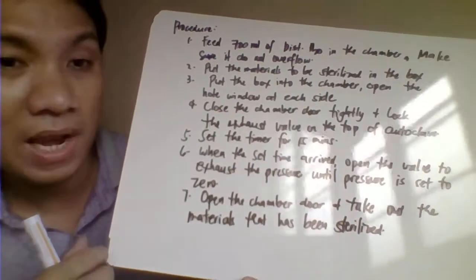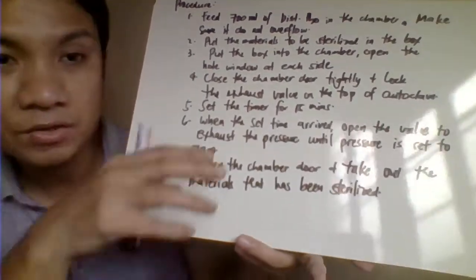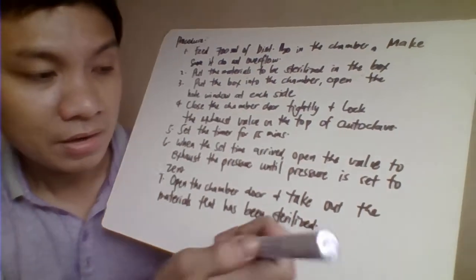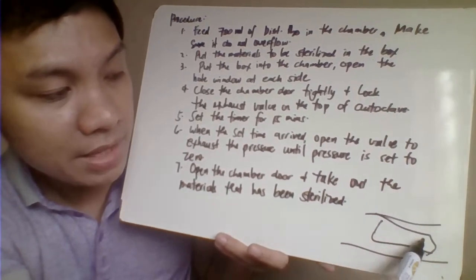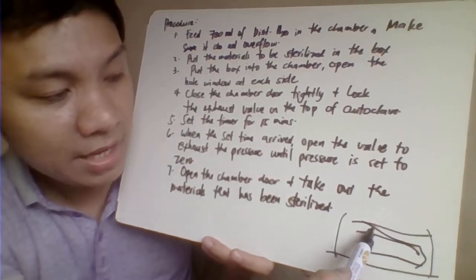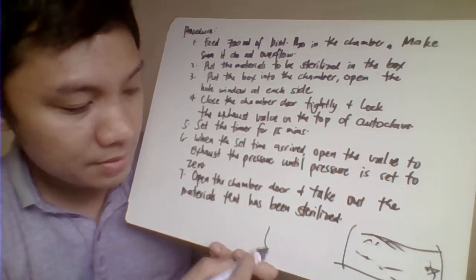For the procedure, number one, you need to remove the chamber. For example, this is our autoclave with a box inside. First, you take that box out because in this box you will place your materials to be sterilized.